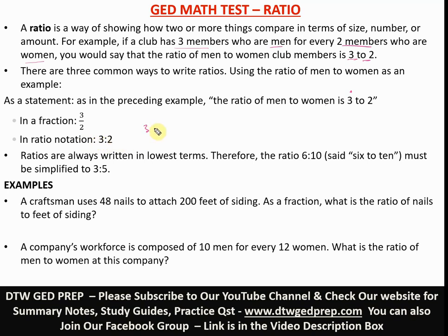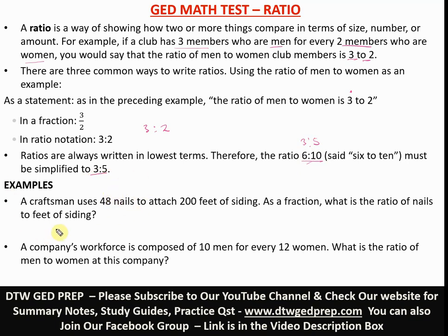We also have the ratio notation: three colon two. You should note that ratios are always written in their lowest terms. For example, if you have six to ten, you don't leave it — you simplify it. Two goes into six three times and into ten five times, and that can't be further simplified, so we leave it as three to five.